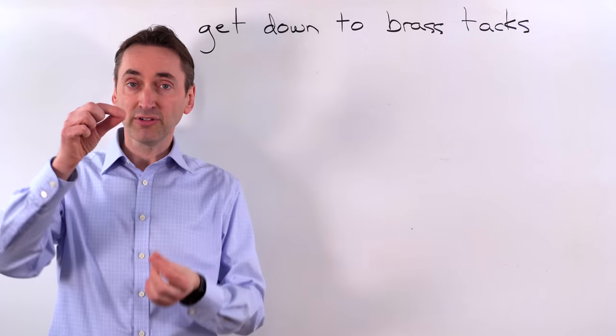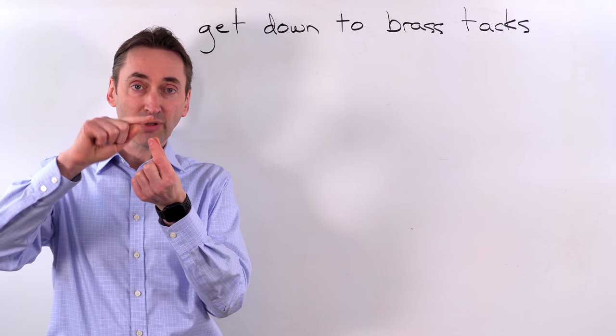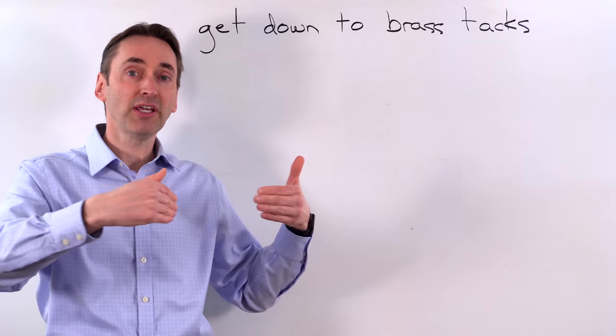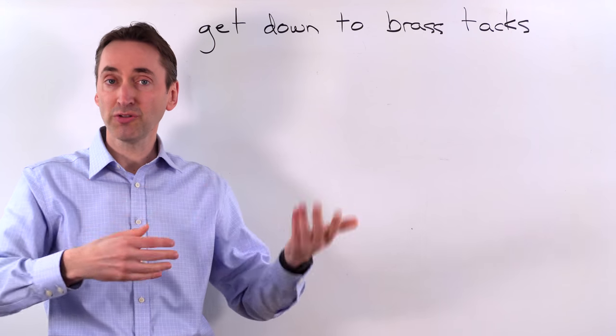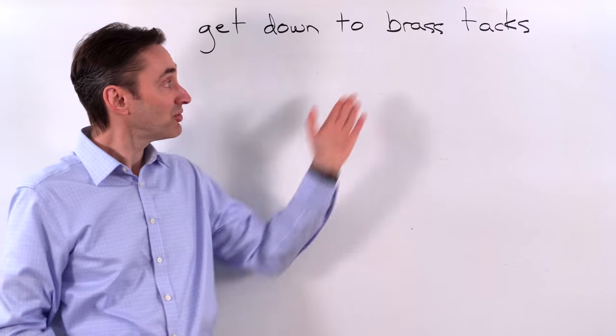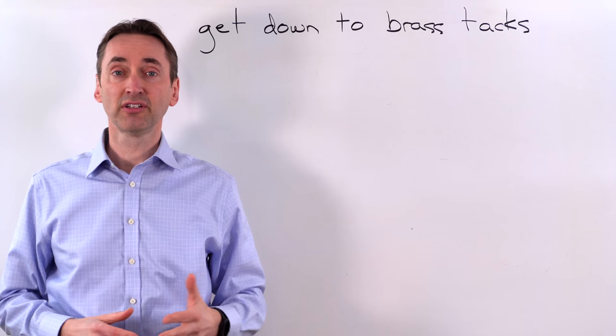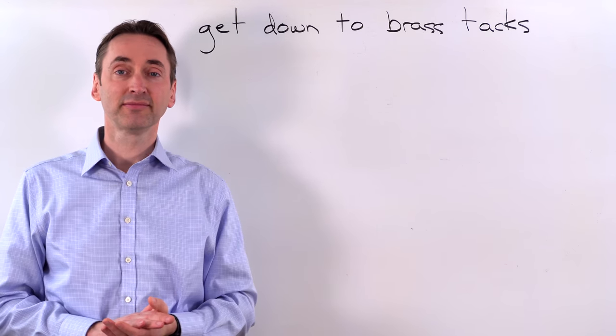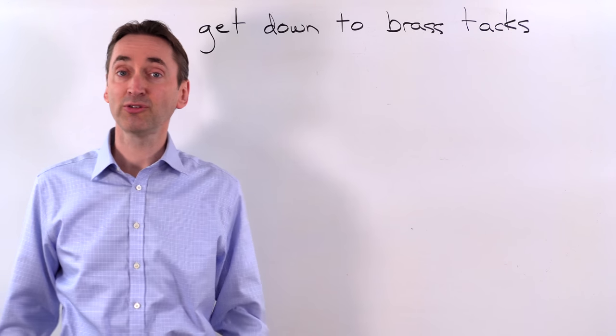Brass tacks are a type of metal pin with a round end on it and they would hammer those into different things. They would use it in furniture and things like that. Brass is good because it doesn't rust, so it lasts for a very long time. And that's the origin of get down to brass tacks.